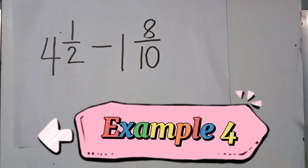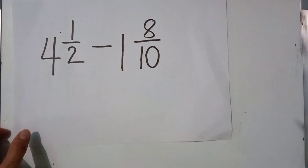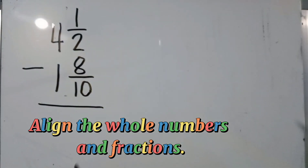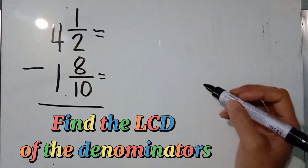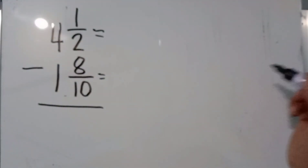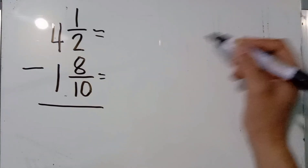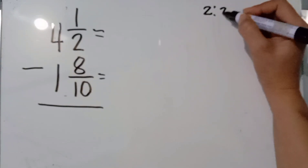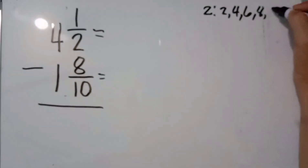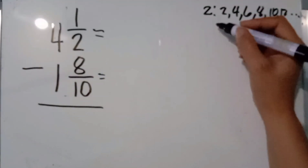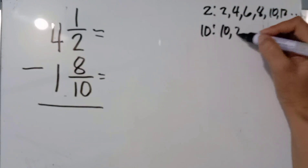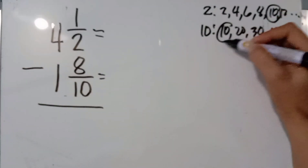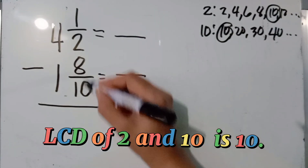Next example: 4 and 1 half minus 1 and 8 tenths. Align the whole numbers and fractions. Find the LCD of the denominators 2 and 10. Using the listing method: multiples of 2 are 2, 4, 6, 8, 10, 12; multiples of 10 are 10, 20, 30, 40. The common multiple is 10, so the LCD of 2 and 10 is 10.